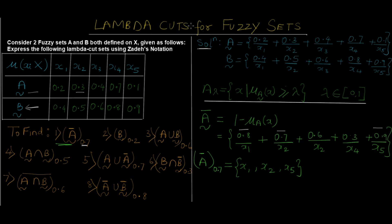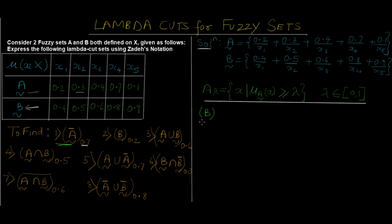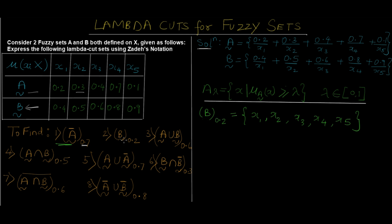For the second question, we need to find the lambda cut set for B at lambda 0.2. We already have fuzzy set B and just need to include all values greater than or equal to 0.2. Since all values — 0.4, 0.5, and the rest — are greater than or equal to 0.2, all elements are included. So B at lambda 0.2 = {X1, X2, X3, X4, X5}. This was straightforward since no prior fuzzy operation was needed.